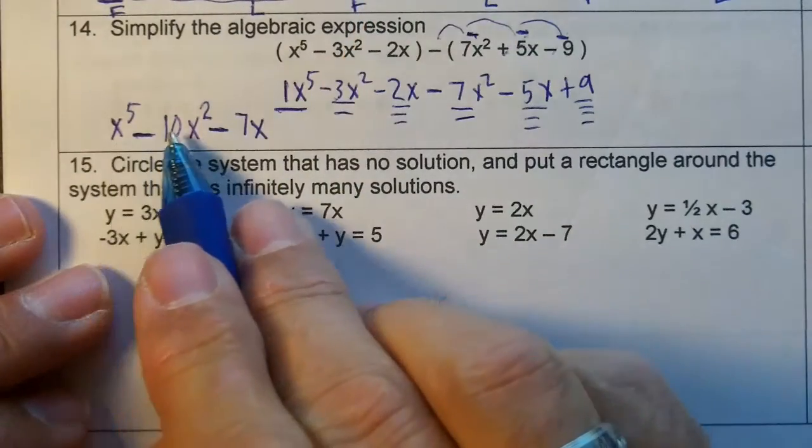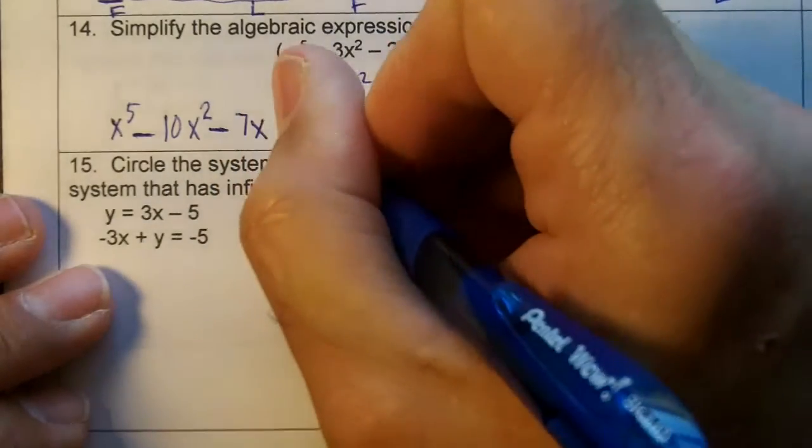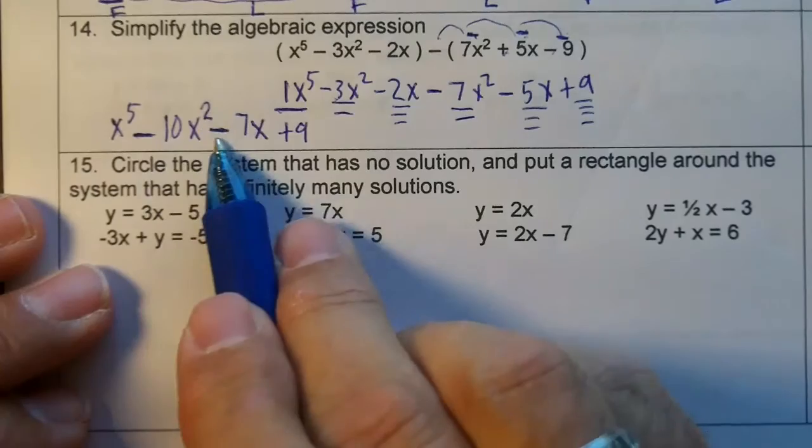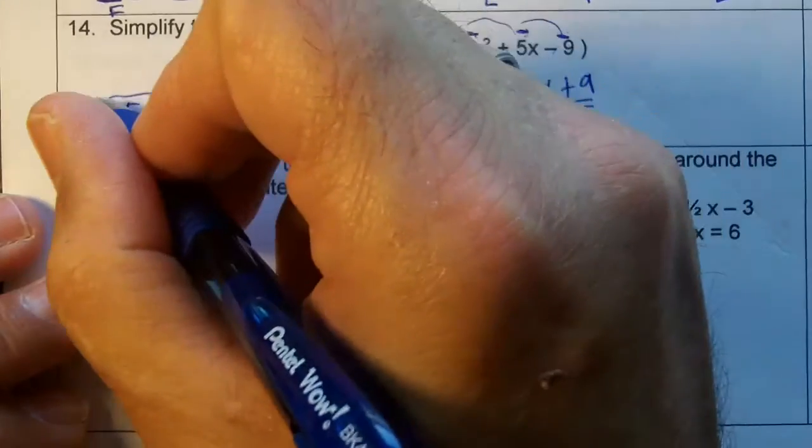So we have x to the 5th, minus 10x squared, minus 7x, and the plus 9 goes at the end. Notice that I put sign, number, letter, exponent, sign, number, letter, exponent. Get the sign, get the number, get the sign, get the number. This would be the simplified polynomial. Thank you.